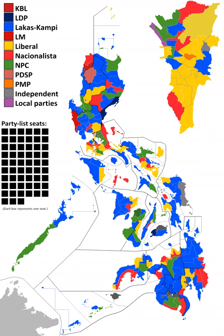When the parties with 2% of the national vote are more but not meeting the 20% of the total seats, parties with less than 2% of the vote will get one seat each until the 20% requirement is met.